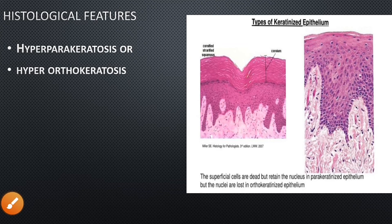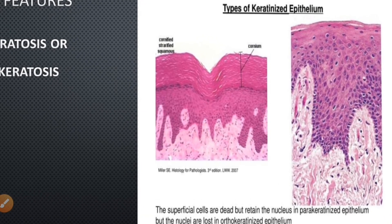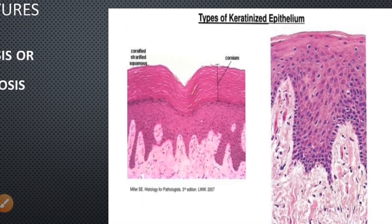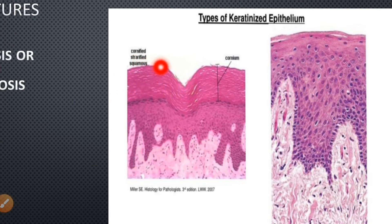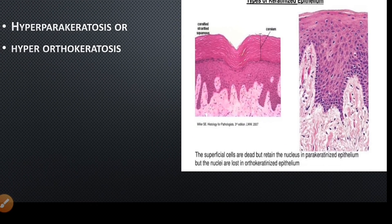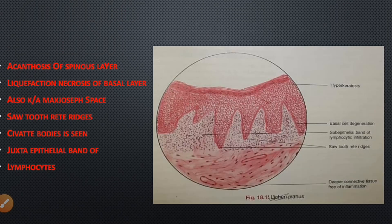Regarding histological features, there may be either hyperparakeratosis or hyperorthokeratosis. In hyperparakeratosis, the stratum corneum layer contains dead cells but the nuclei are still retained — as visible in the image where purple-stained nuclei are still present. In hyperorthokeratosis, dead cells are present in the stratum corneum but the nuclei are lost. Additionally, there is acanthosis of the spinous layer, meaning an increase in the number of spinous layer cells.